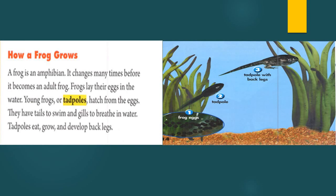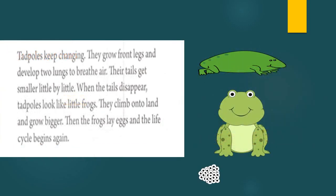Tadpoles eat, grow, and develop their back legs. In the third stage, tadpoles develop their back legs — you can see the back legs here.